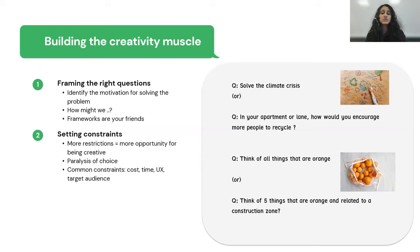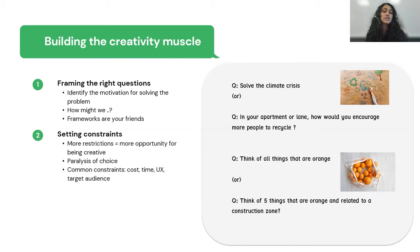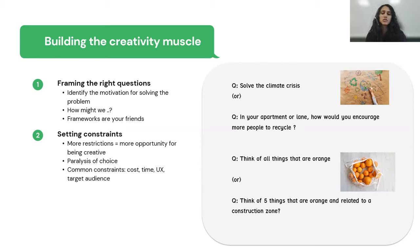I would encourage you all to check out the Stripe API blog about how they set a bunch of restrictions and requirements while designing their payments API and how it helped push the boundaries of their thinking and create something amazing. This demonstrates that creative thinking is very applicable even to technical problems, and it shows how engineers played an important role in brainstorming creative solutions for that API.